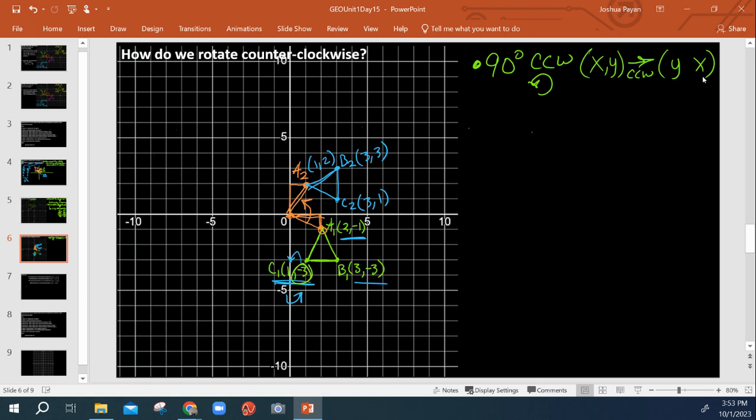So this Y coordinate went from negative 3 to flipping places and becoming a positive 3. So that tells me I had a Y sign change.